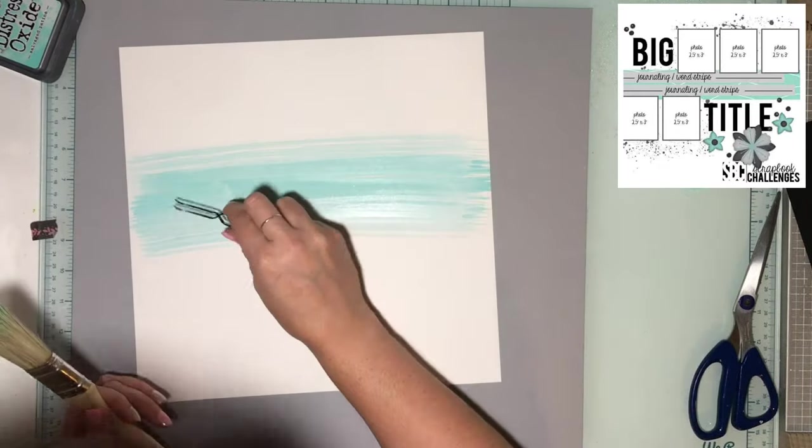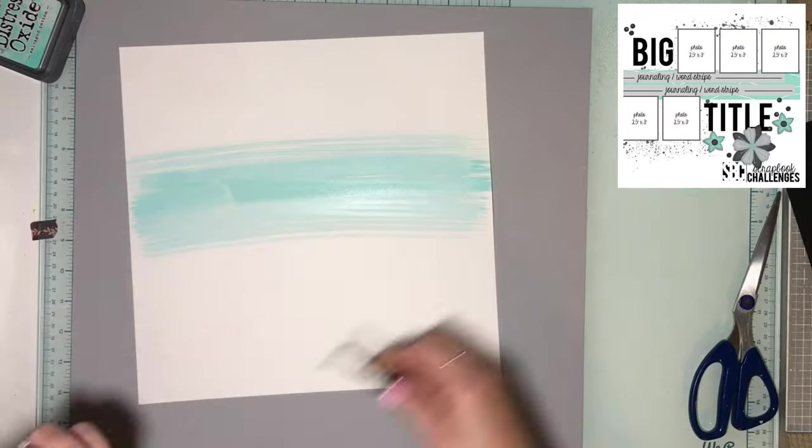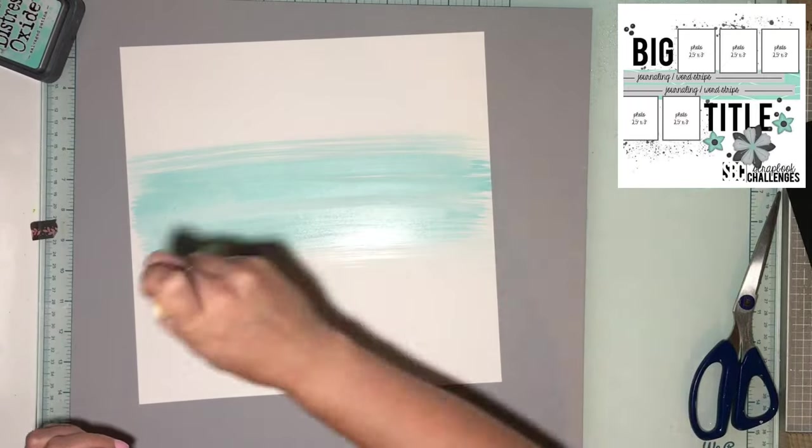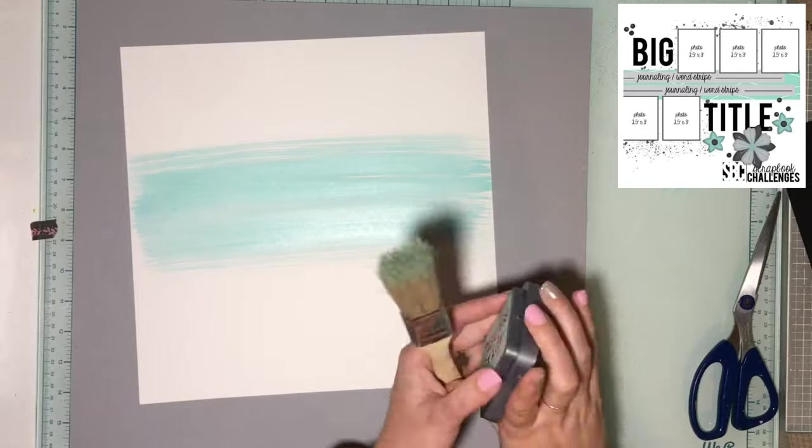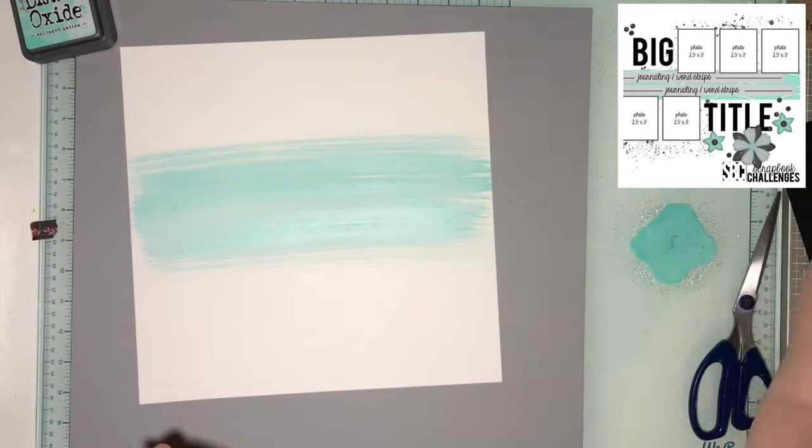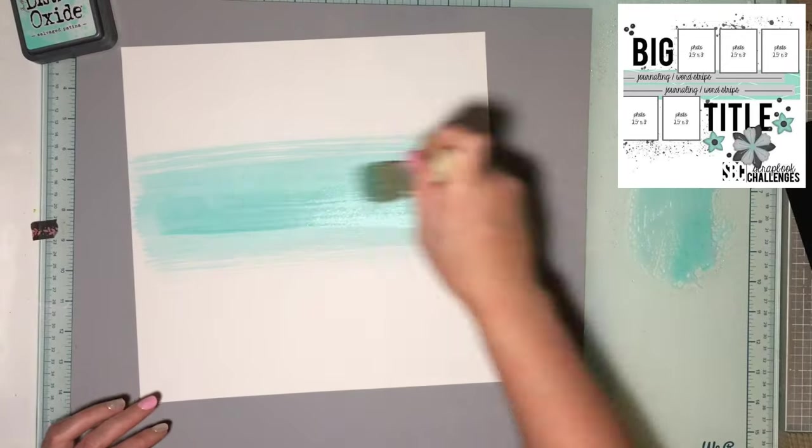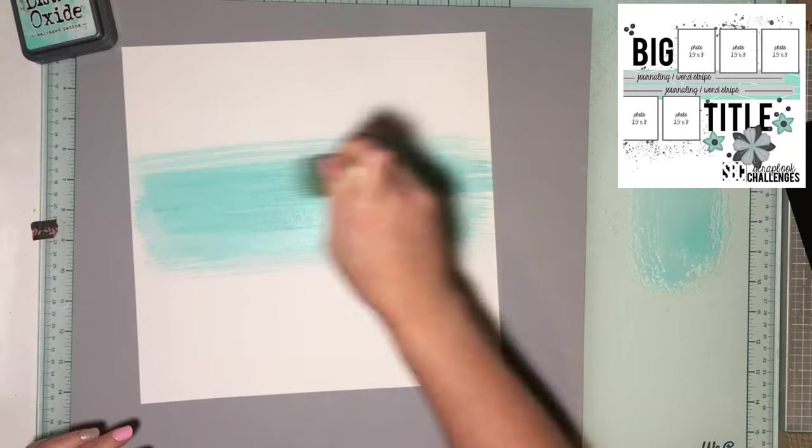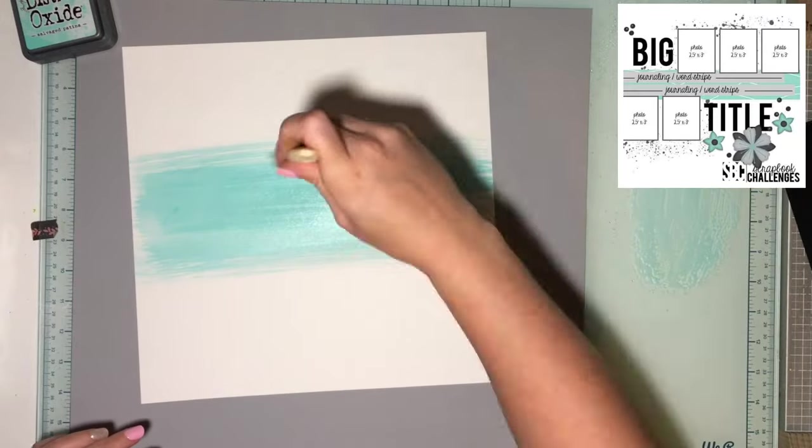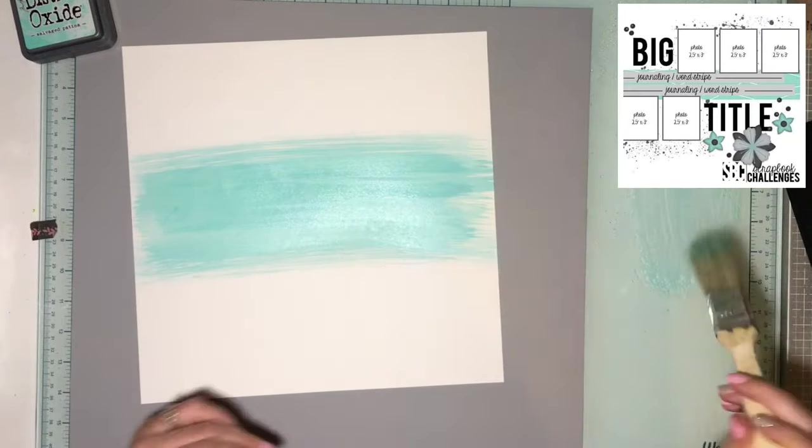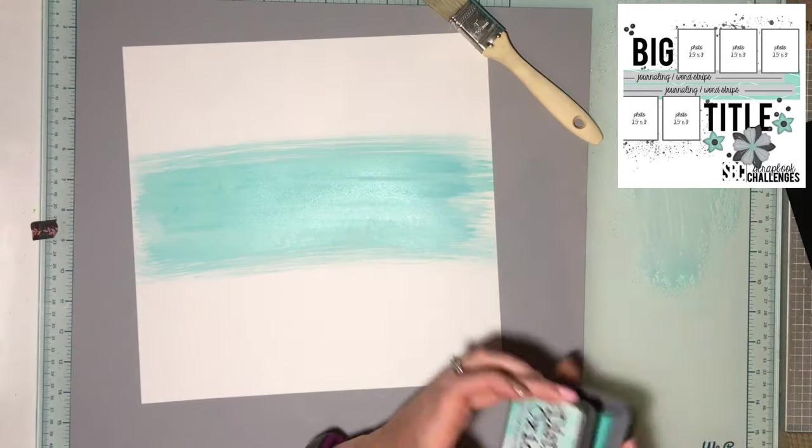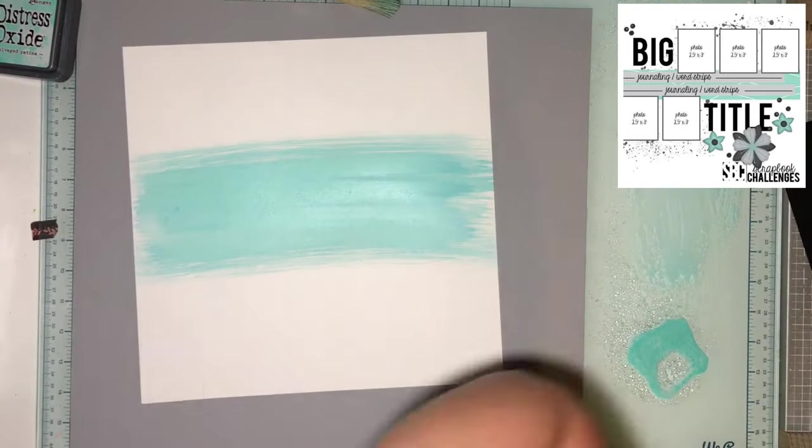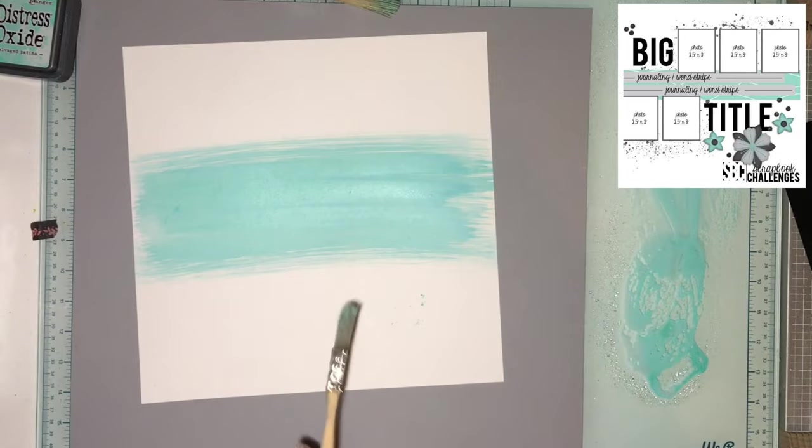I decided to take some marshmallow cardstock and dry brush on some salvaged patina. I squished the ink pad on my glass mat and then spritzed it so it's wet. Then I took the biggest brush I have and I'm just brushing across with salvaged patina.